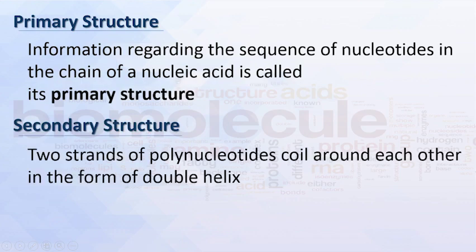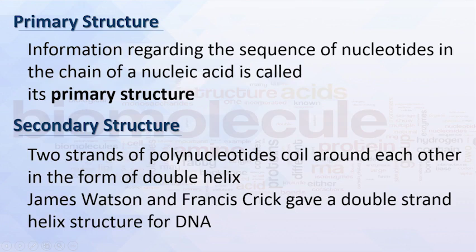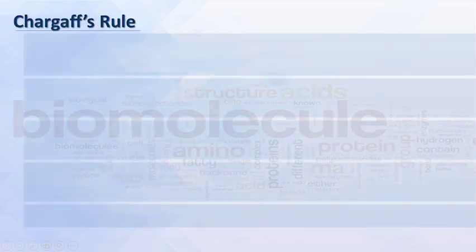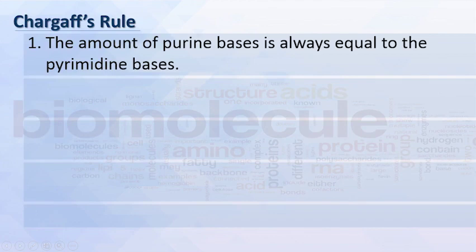Two strands of polynucleotides coil around each other in the form of a double helix — that's the secondary structure. James Watson and Francis Crick proposed the double-stranded helix structure for DNA.